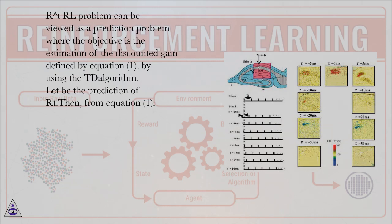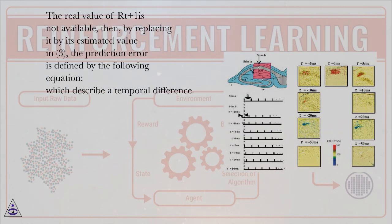The RL problem can be viewed as a prediction problem where the objective is the estimation of the discounted gain defined by equation (1), by using the TD algorithm. Let be the prediction of R_t. Then, from equation (1), the real value of R_{t+1} is not available. Then, by replacing it by its estimated value in (3), the prediction error is defined by the following equation, which describes a temporal difference.